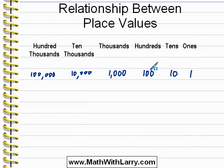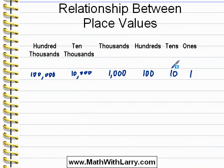Make sure you see how that works. Going to the right, it's the same thing. If we compare the thousand to the ten, since it's two places to the right, we can say that ten is one hundredth the size of one thousand.